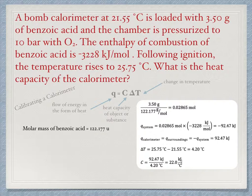Here now is the key concept when using a calorimeter. The heat flow associated with the calorimeter is the opposite sign of that associated with the system. If heat flows out of the system, it must flow into the calorimeter. So in this case, the calorimeter heat flow is positive 92.47 kilojoules.